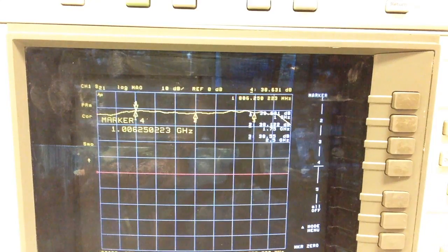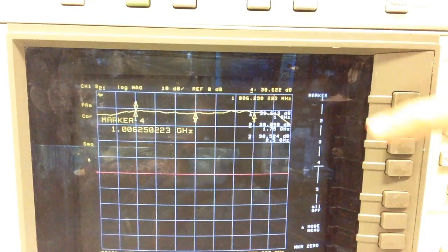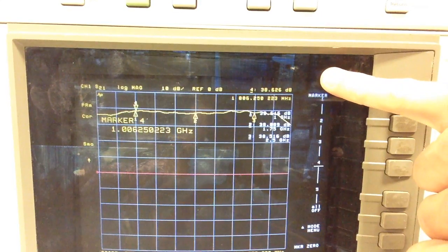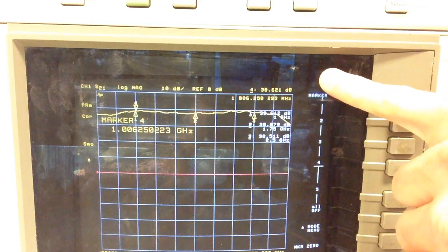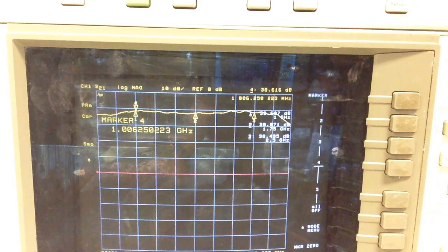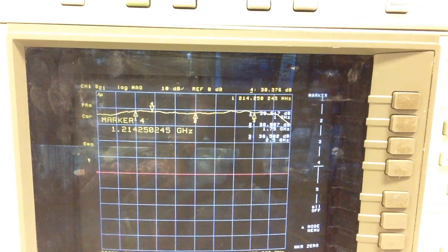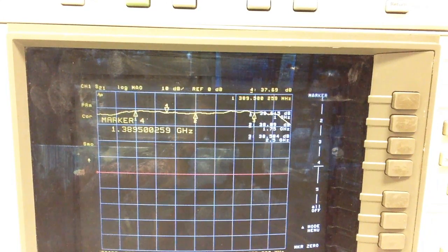I can take my marker here and do a quick sweep across the whole band. You can watch the gain as I move the marker. Right now I'm getting 38.6 dB. It remains fairly consistent across the whole band.